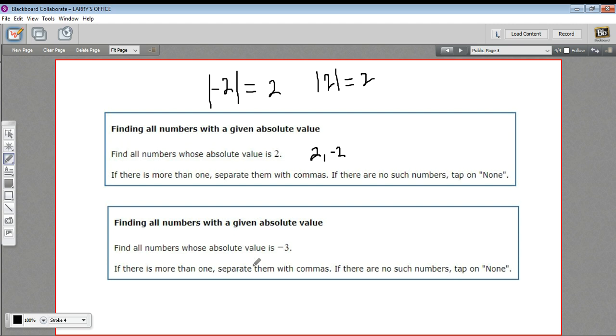This next problem asks, find all numbers whose absolute value is negative 3, and this should look fishy to you. Absolute value always gives a positive answer, so the absolute value of something can't be a negative value. It can't be negative 3.